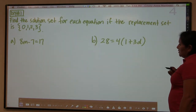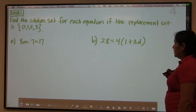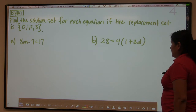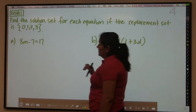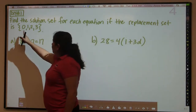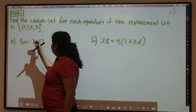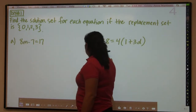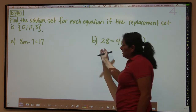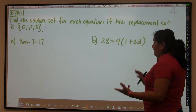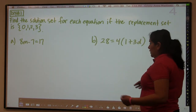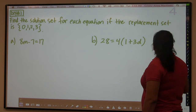Now I'll give you an example to try — it has two parts. Find the solution set for each equation. You're going to use the same four numbers for both equations, then come up with the solution set for each one.